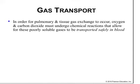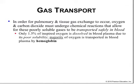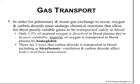In order for pulmonary and tissue gas exchange to occur, oxygen and carbon dioxide have to undergo chemical reactions that allow these gases to be transported safely in the blood. Only 1.5% of inspired oxygen is dissolved in blood plasma due to its poor solubility. The majority of oxygen is bound to hemoglobin. CO2 is much more soluble in water than oxygen, but despite that fact, CO2 is transported in the blood plasma primarily as bicarbonate — a water-soluble derivative of carbon dioxide.